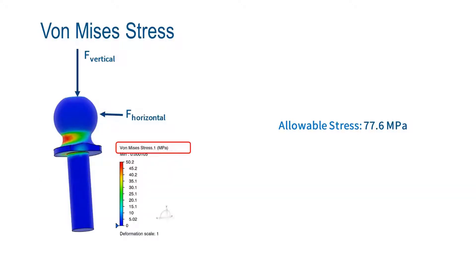After we run the simulation in 3D experience, we compare the Van Mises stress calculated to the allowable stress limit. Since the Van Mises stress is only 50.2 MPa, the design of the ball is acceptable.